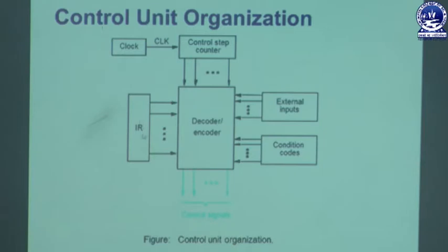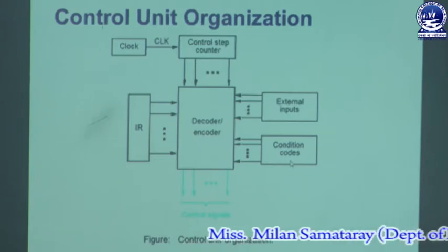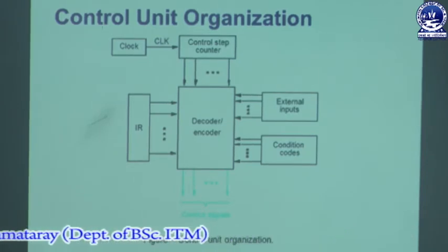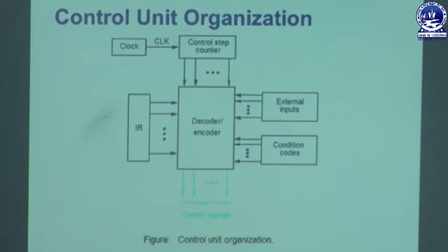For example, if the instruction register contains an add instruction, then there must be a corresponding control signal in the control signal sequence. That content is important. The next one is the content of the condition code flags — I discussed in previous lectures about the condition code flags like zero flag, overflow flag, negative flag, and carry flag. This flag content is also important. The last one is external inputs — external input signals like memory function complete signal or interrupt signals, because these signals are not included in the instructions since interrupts do not come in the same sequence as the instructions.